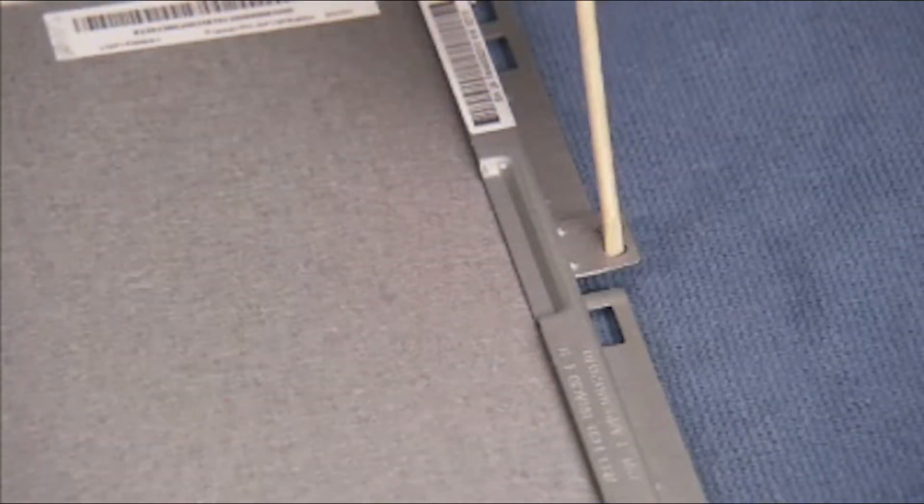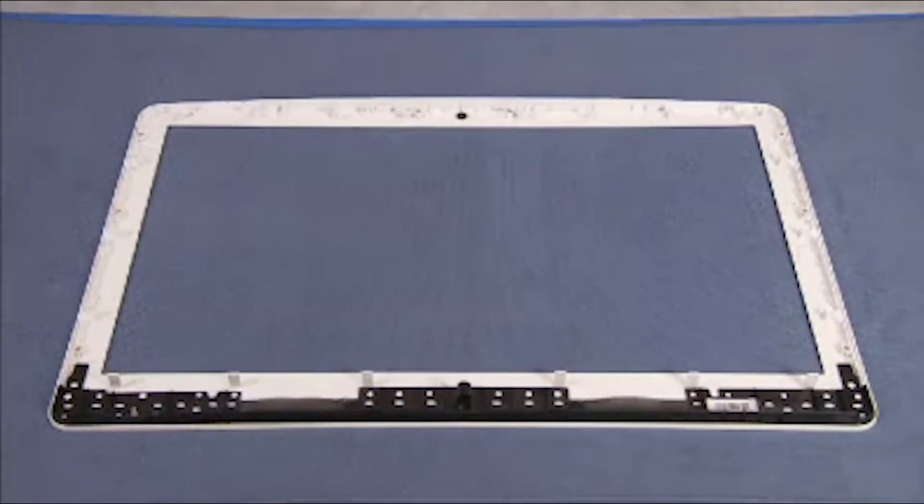There are holes on the panel that align over locator pegs on the front bezel. To install the LCD panel, place the front bezel face down on the work surface.